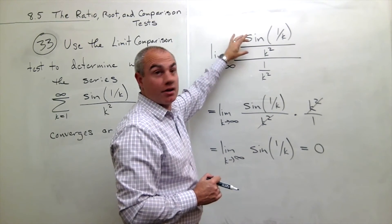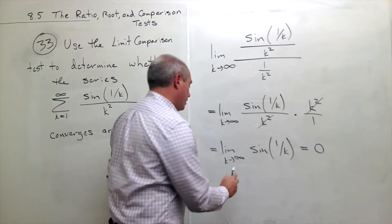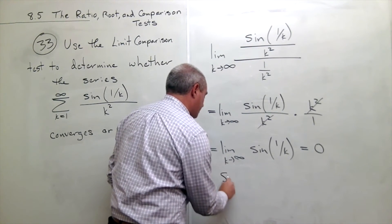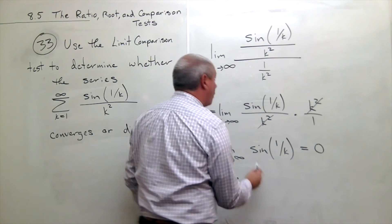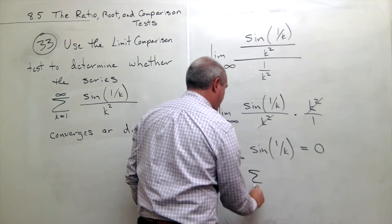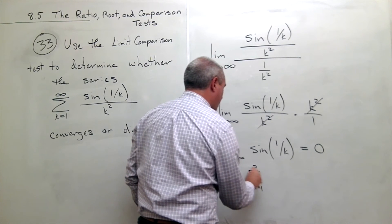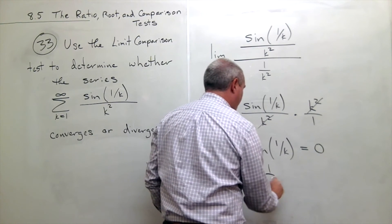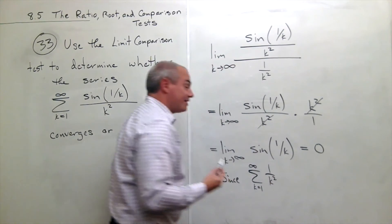It just so happens that since we know already that the sum k going from 1 to infinity of 1 over k squared, that does converge. Because it's a p-series with p equal to 2.